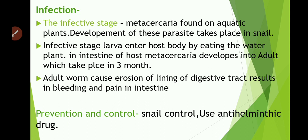Prevention and control of Fasciolopsis buski include control of the snail, because the primitive stages of its development are found in the snail and it completes its life cycle stages there. Also, use anti-helminthic drugs like hexylresorcinol and crystalloids to control the disease.